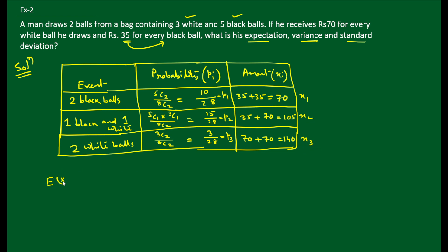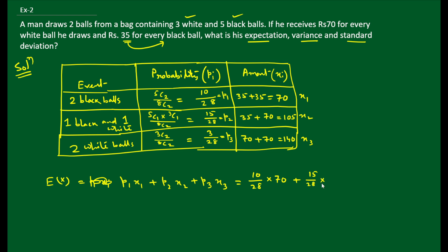Using the probability distribution table with x1=70, x2=105, x3=140 and p1=10/28, p2=15/28, p3=3/28, the expectation is: E(X) = (10/28)×70 + (15/28)×105 + (3/28)×140. Calculating this gives approximately 96.25.